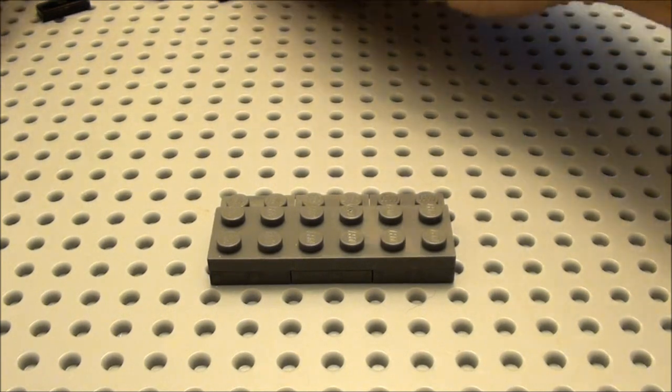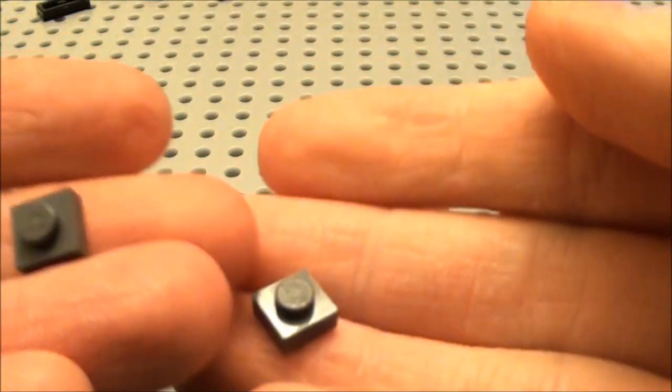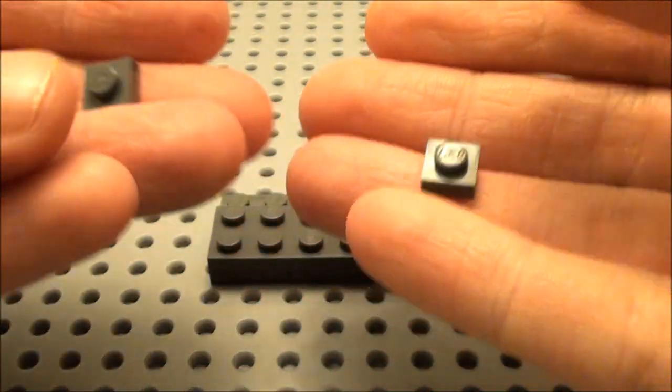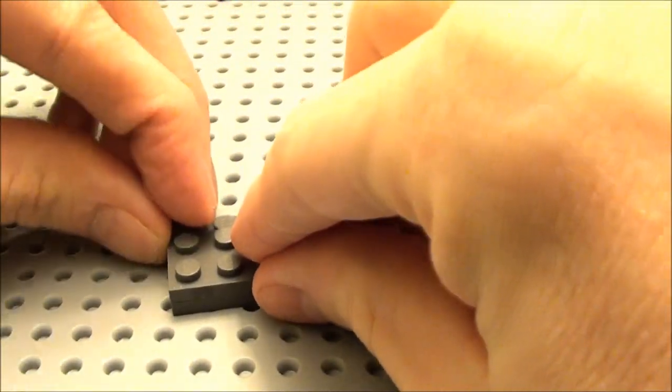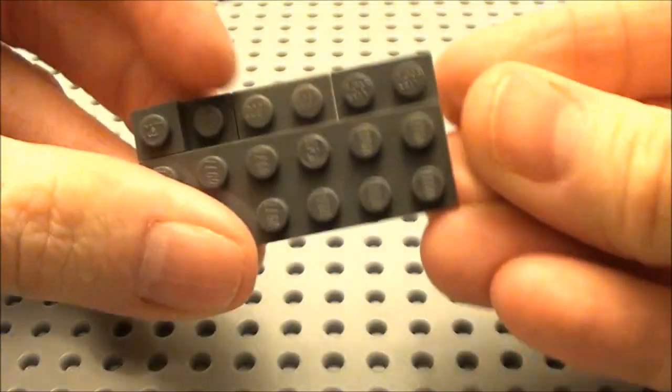The next thing you're going to need to use is two of these 1 by 1 plates. Place them here on the sides.